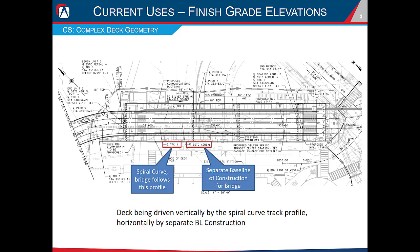OBM can handle some pretty complex geometry scenarios. This light rail bridge project had a track alignment on a spiral curve, which the contractor didn't want to build since every horizontal dimension would have been 'varies.' So we created a separate baseline of construction to make construction and dimensioning in the plans much easier, while the bridge still followed the profile of the track. This means the deck was being driven vertically by the track profile and horizontally by the separate baseline of construction.